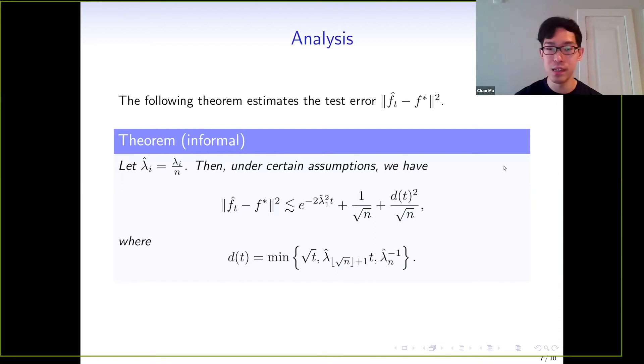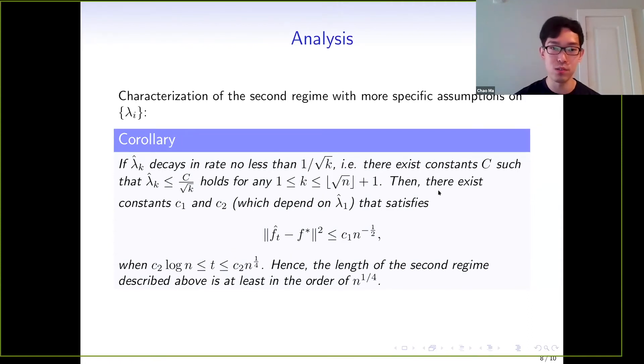To make it more explicit, let's consider a corollary in which we assume λ̂_k decays in a rate no less than 1 over k. This is quite a weak assumption because we need the summation of λ̂_k squared to be bounded. Under this assumption, there exist constants c_1, c_2 such that the test error is bounded by c_1 over square root of n for t from c_2 log n to c_2 n^(1/4). This means the length of the second regime is at least in the order of n^(1/4).